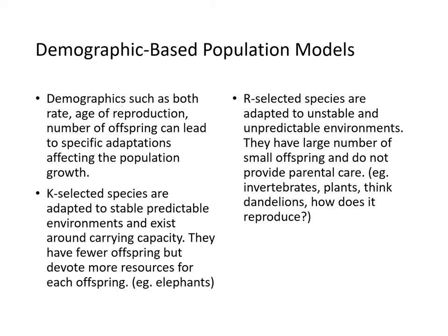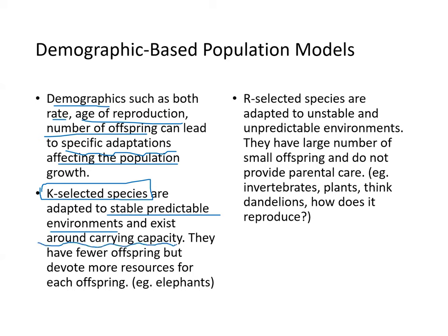There are demographic-based population models based on rate of reproduction, age, number of offspring, and so on. K-selective species are adapted to stable, predictable environments, exist near carrying capacity, have fewer offspring but devote more resources to each — like elephants and humans. R-selective species are adapted to unstable environments, produce large numbers of small offspring with no parental care — typically invertebrates and plants, like dandelions dispersing tiny seeds in the wind.